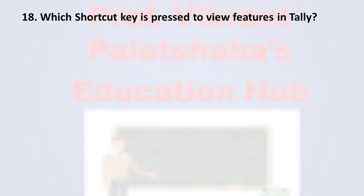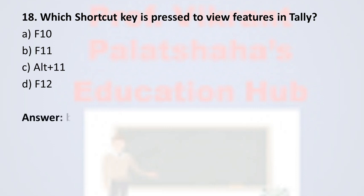Question number eighteen: Which shortcut key is pressed to view features in Tally? Option A: F10, Option B: F11, Option C: Alt+F11, Option D: F12. The correct option is Option B, F11. To view the features of Tally, the shortcut key F11 is used, therefore the correct option is Option B.